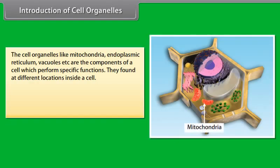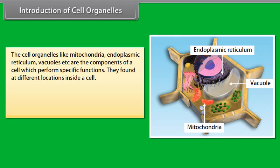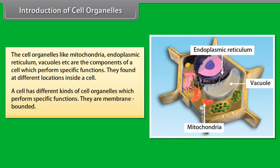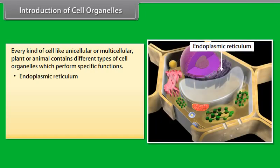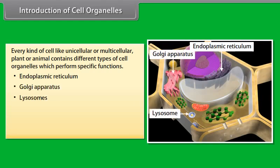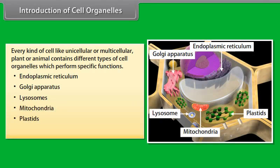The cell organelles like mitochondria, endoplasmic reticulum, vacuoles, etc. are the components of a cell which perform specific functions. They are found at different locations inside a cell. A cell has different kinds of cell organelles which perform specific functions and they are membrane bounded. Every kind of cell, whether unicellular or multicellular, plant or animal, contains different types of cell organelles. Endoplasmic reticulum, Golgi apparatus, lysosomes, mitochondria, plastids, and vacuoles are some examples. Now let us know their structure and functions in detail.